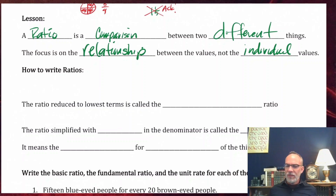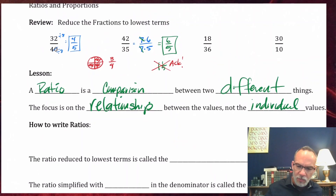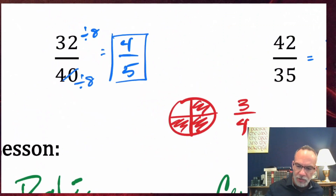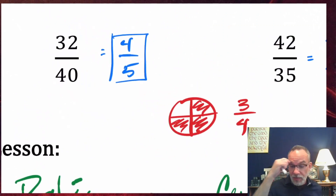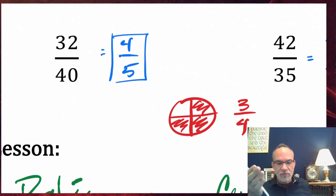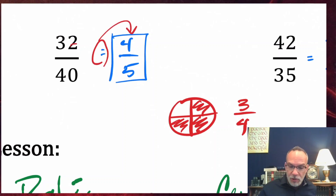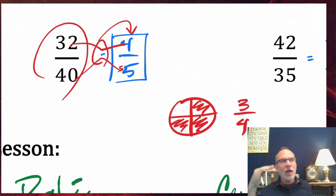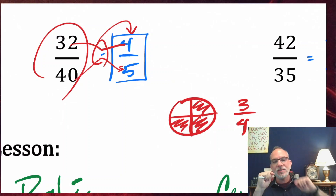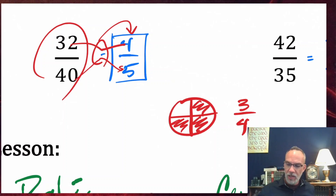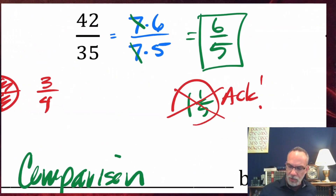Going back to 32 over 40 — the main focus isn't really 32 and it isn't really 40; it's the relationship between those two things. How does 32 relate to 40? By saying it equals four fifths, we're saying it has the same relationship as four to five. I'm not saying 32 equals 4 or that 40 equals 5, but the relationship between the top and bottom is the same as four to five. That's what a ratio is.